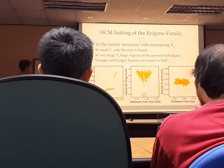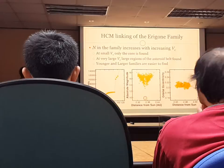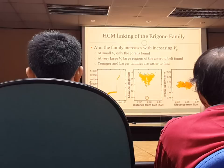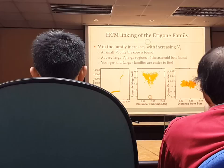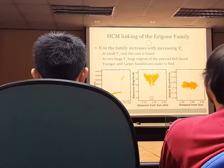Here's the number in the family as a function of our linking criteria. We have nothing, nothing, nothing — we get to 30 meters per second and we jump up and plateau. We've reached the core of our family, and then all of a sudden we have the entire asteroid belt. We built our family as we saw before, and we can see the V-shape in a tight cluster of orbital elements.